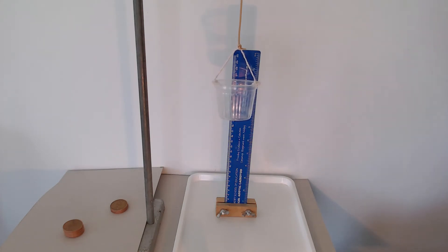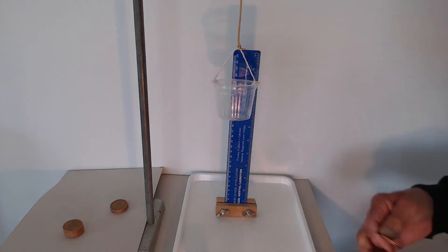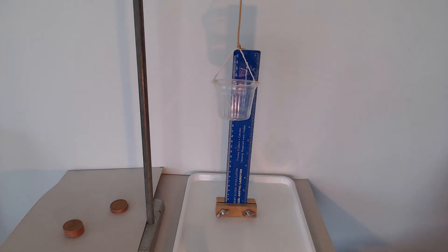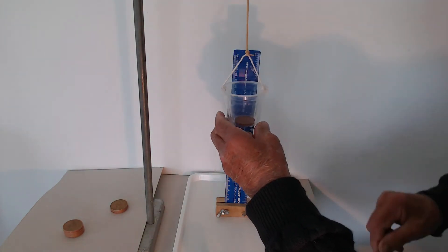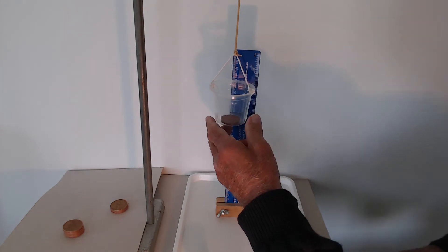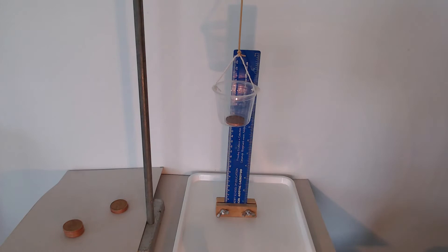So let's take some readings. First of all, the unloaded reading to the best of my ability on the scale there is 26.3 centimeters. I'm now going to load some weights. These weights are actually old pennies and we'll put them in two at a time.